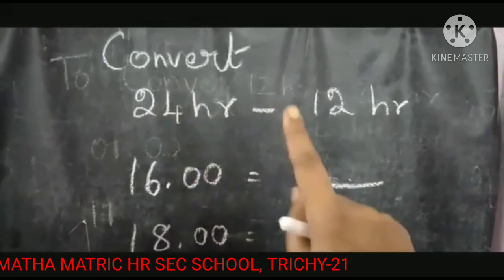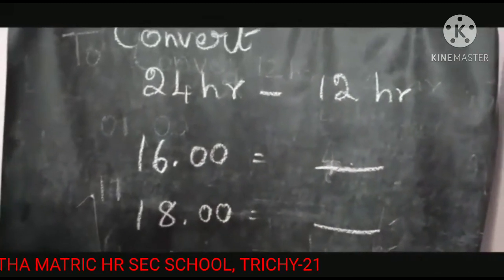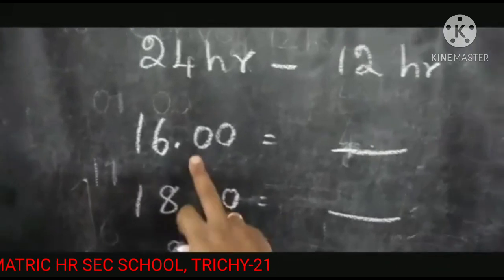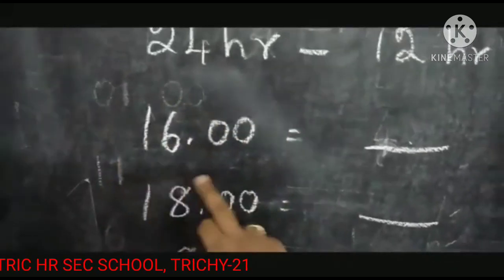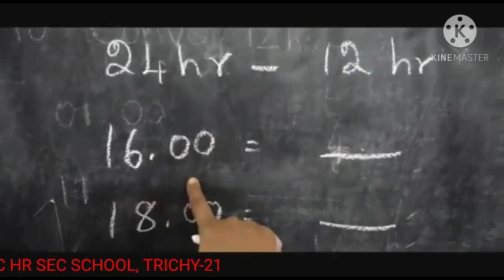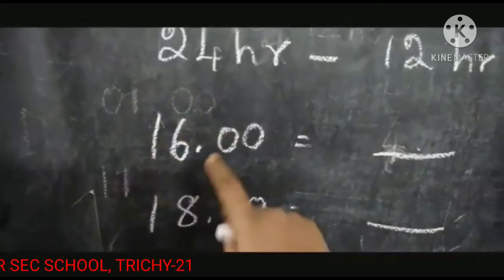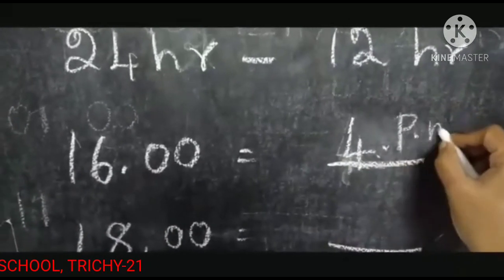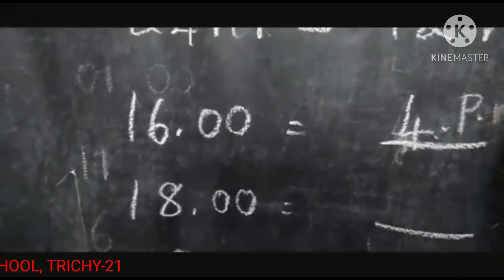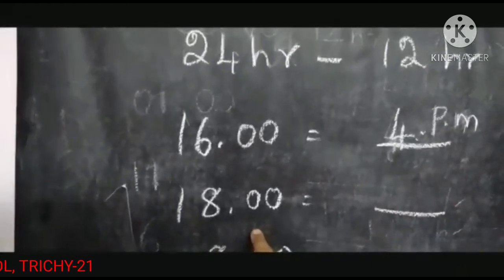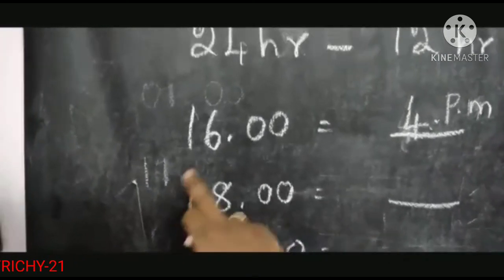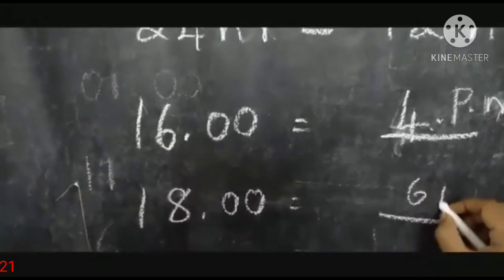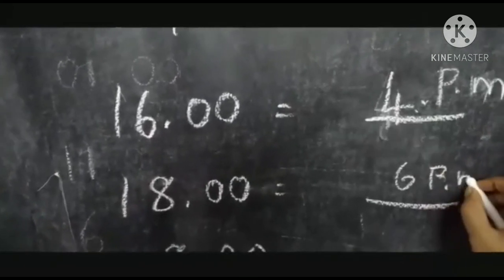Now to convert 24-hour time to 12-hour time, you subtract 12 from the hours. For example, 16:00 — subtract 12: 16 minus 12 equals 4, so it becomes 4 PM. Another example: 18:00 — subtract 12: 18 minus 12 equals 6, so it becomes 6:00 PM.